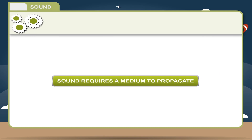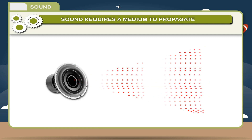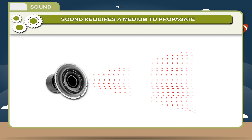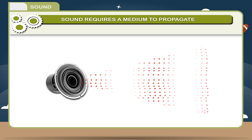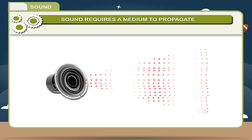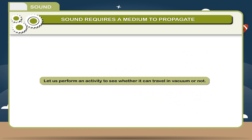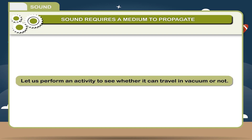Sound requires a medium to propagate. Unlike light, sound is the form of energy for which a medium is necessary. Since a vibrating object passes the vibrations to the air molecules, it means that the sound travels in a medium. Let us perform an activity to see whether it can travel in a vacuum or not.